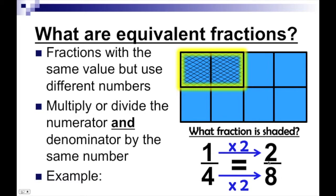I want you to make sure you understand that even though we changed how many pieces there were, we didn't change the size of the whole. That whole stays the same size the entire time. What we're doing is changing the size of each of the pieces, by multiplying the numerator and denominator by the same number.